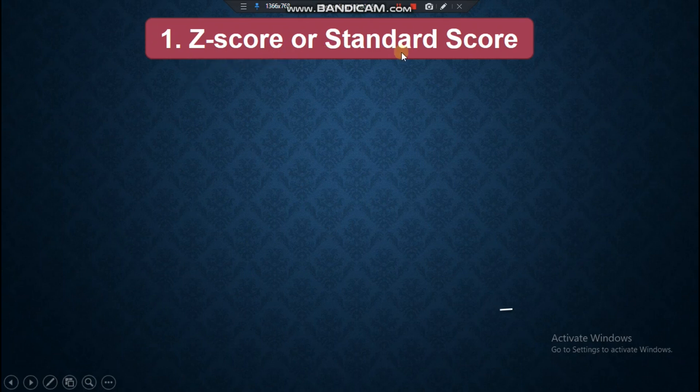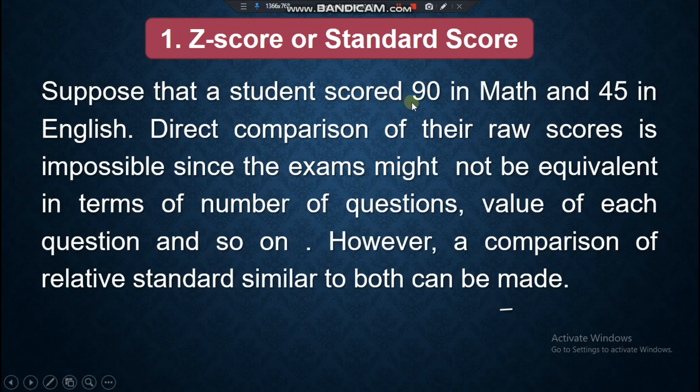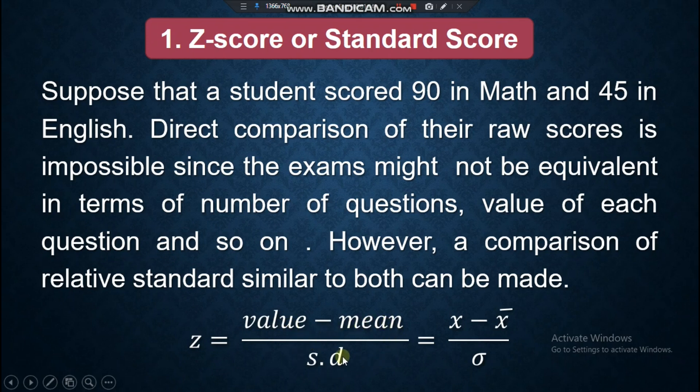Let's have this first: Z-score or standard score. Suppose that a student scored 90 in math and 45 in English. Direct comparison of their raw scores is impossible since the exams might not be equivalent in terms of number of questions, value of each question, and so on. However, a comparison of relative standard similar to both can be made. The Z-score formula is Z equals the value or score minus the mean all over the standard deviation.